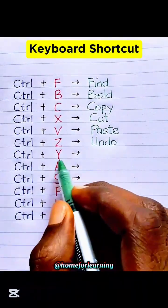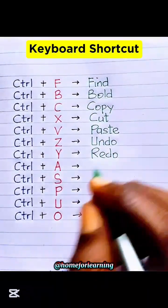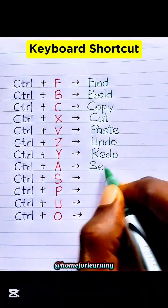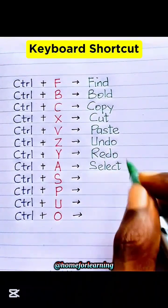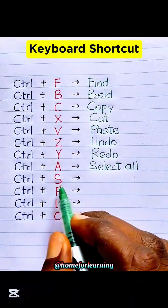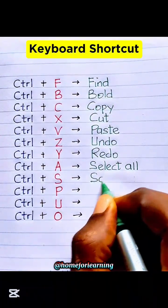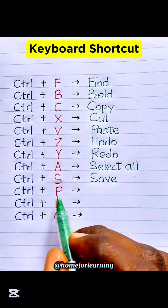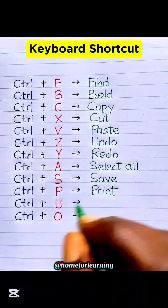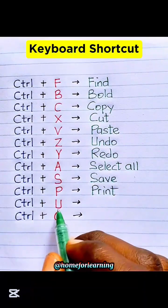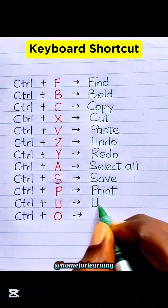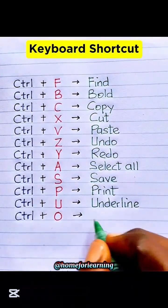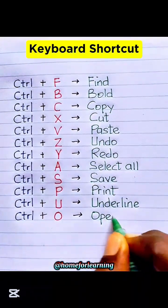Ctrl Y: Redo. Ctrl A: Select All. Ctrl S: Save. Ctrl P: Print. Ctrl U: Underline. Ctrl O: Open File.